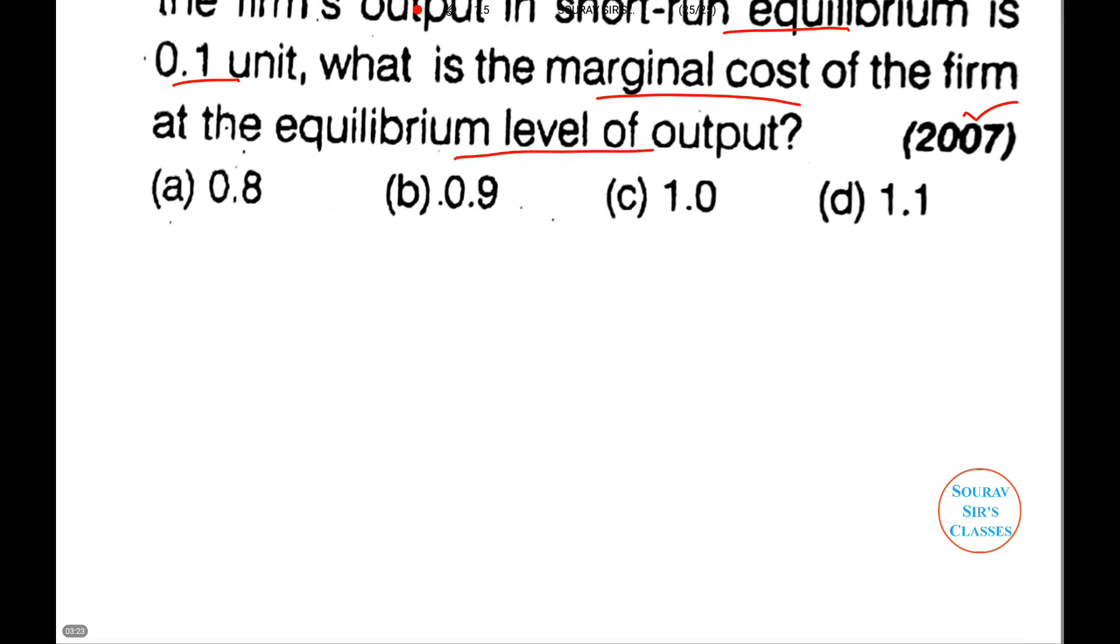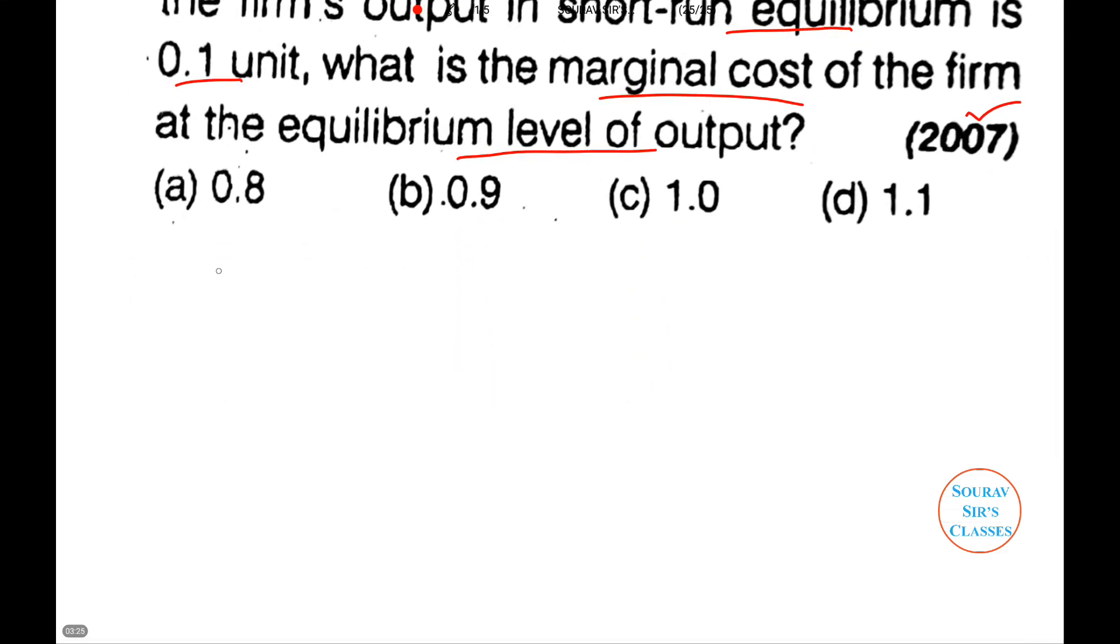So let's do this. The demand curve is given by D(p) = 1 - p. This is the demand function, the inverse demand function. That means this is in terms of p, we'll get it in terms of q. So in terms of quantity.